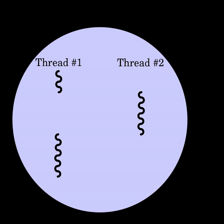Although threads seem to be a small step from sequential computation, in fact they represent a huge step. They discard the most essential and appealing properties of sequential computation: understandability, predictability, and determinism. Threads, as a model of computation, are wildly non-deterministic, and the job of the programmer becomes one of pruning that non-determinism.